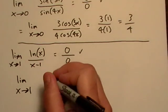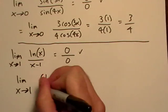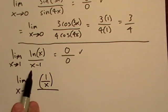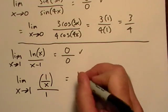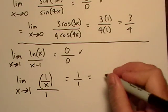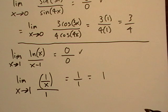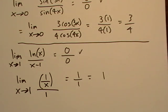And that is going to be derivative of the top. That's just one over x. And then we're going to divide it by the derivative of the bottom, which turns out to be pretty good. It's just one. And we end up with one over one, which is just one. So the limit in that case is just one.